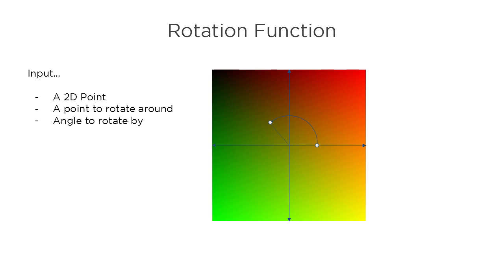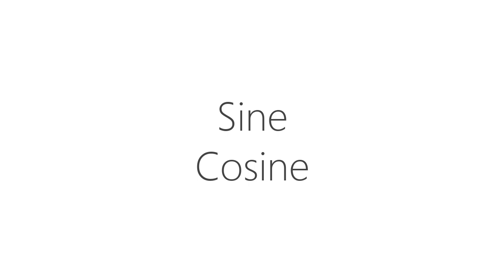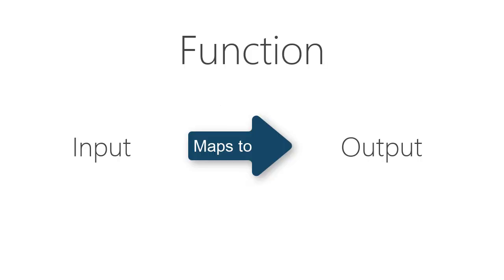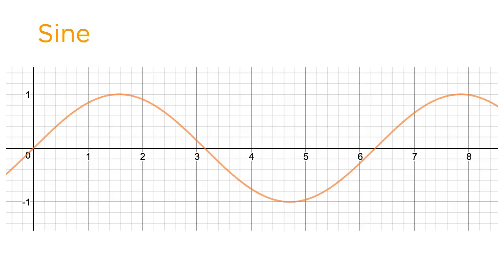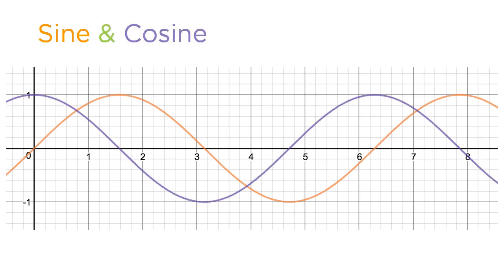To understand how to do this, we need to explore some fundamental theory on the trigonometric functions sine and cosine. Since they are both functions, they take an input and map it to an output value. If we graph the functions, the X axis represents the input values — the angle of rotation — and the output is plotted as the Y value. You are probably familiar with these functions and their characteristic wave-like appearance.